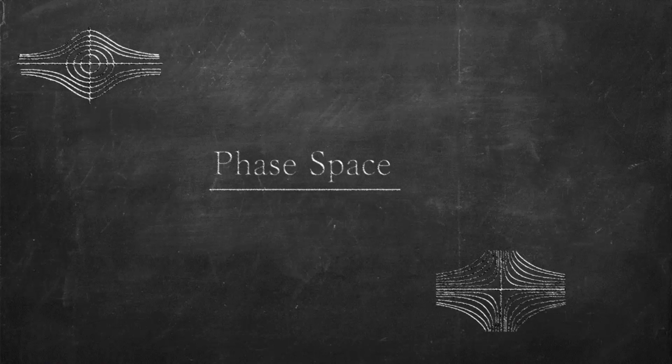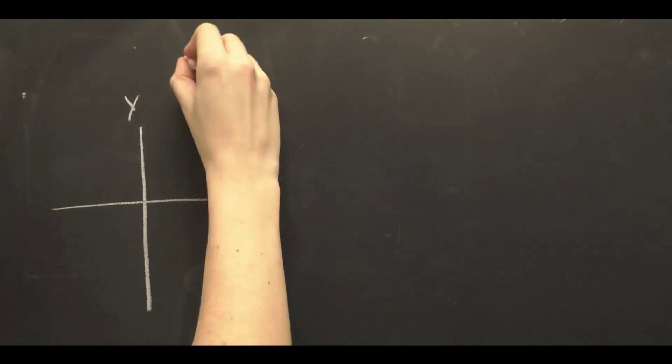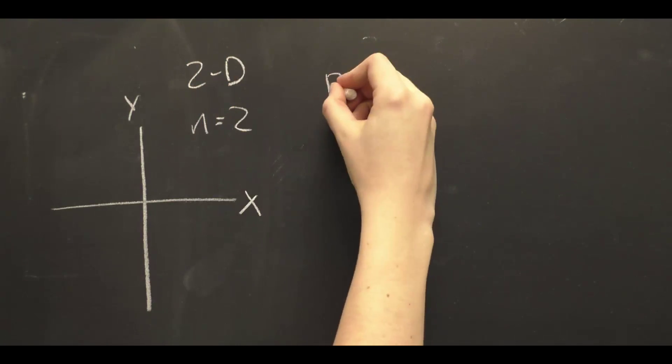The phase space of a dynamic system is the set of all possible states of the system, with each state existing as a point in phase space. For an n-dimensional system, we have n positions and n velocities.